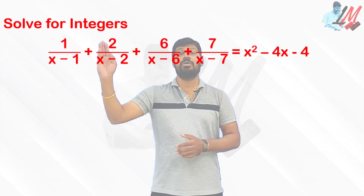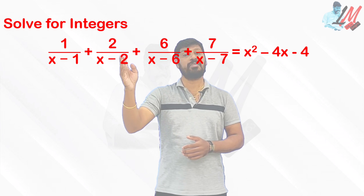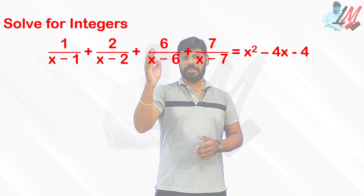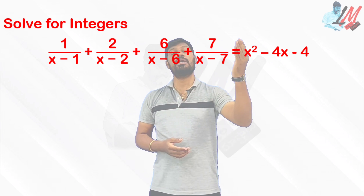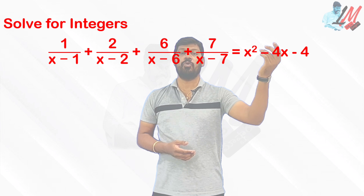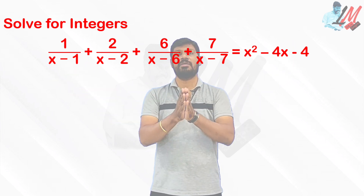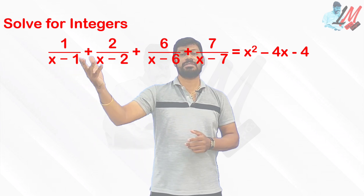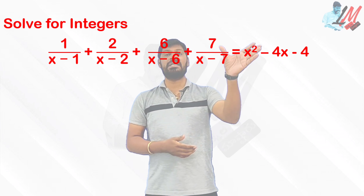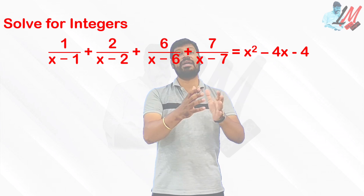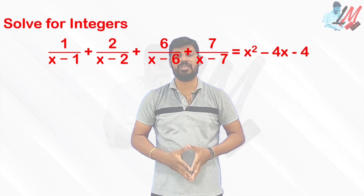Solve for integers: 1/(x−1) + 2/(x−2) + 6/(x−6) + 7/(x−7) = x² − 4x − 4. Looking at this entire expression, some people think it is just a simplification of an algebraic expression, or that it involves finding roots of a quadratic polynomial, but overall they are asking us to find the integral solutions of this entire equation.